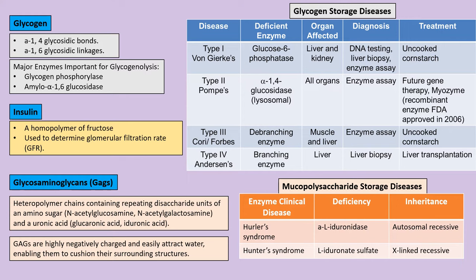GAGs are also called body sponges because they are highly negatively charged, attract water, and have a cushioning effect. Mucopolysaccharide storage diseases include Hurler's syndrome, with alpha-L-iduronidase deficiency, and Hunter's syndrome, with L-iduronidase sulfatase deficiency. This means glycosaminoglycans like heparan sulfate and dermatan sulfate are not broken down and accumulate in the body.